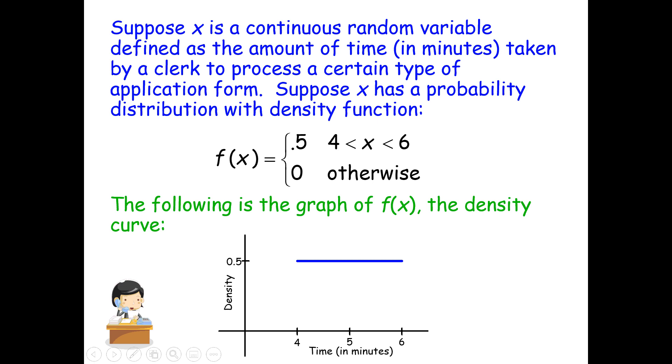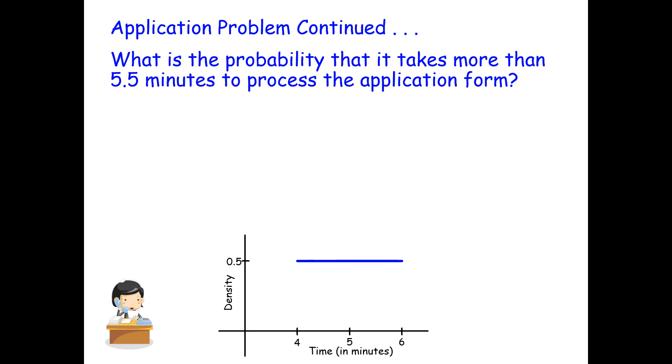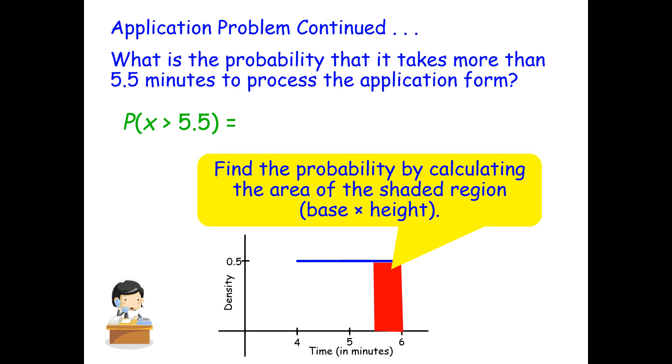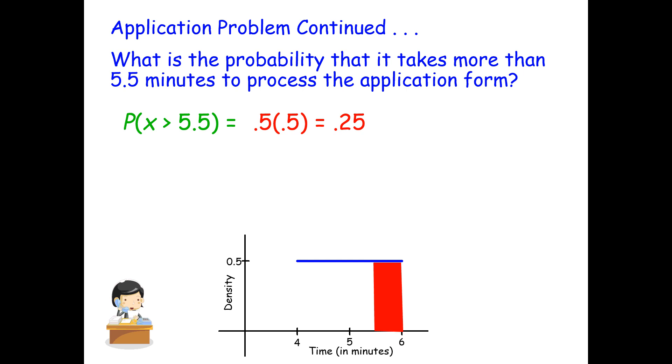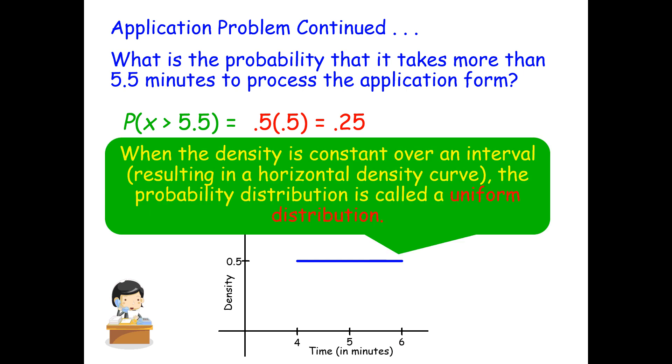Our question becomes what is the probability that it takes more than 5.5 minutes to process the application form? So we're looking for x is greater than 5.5. We want to find the probability by calculating the area of the shaded region. Well, this is just a rectangle, so it's just base times height: 0.5 times 0.5 to get 0.25. When the density is constant over an interval, resulting in a horizontal density curve, the probability distribution is called a uniform distribution.